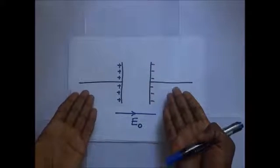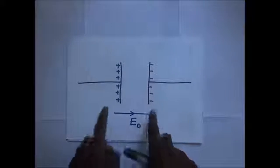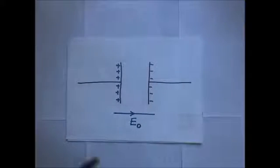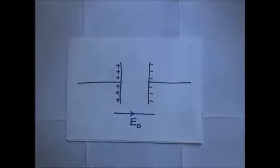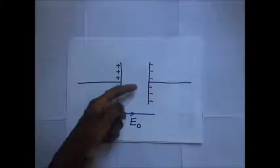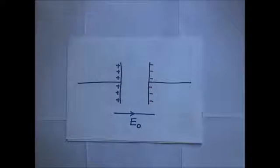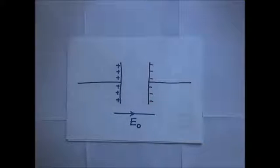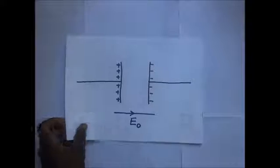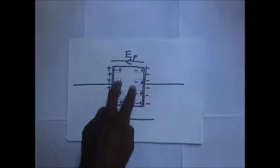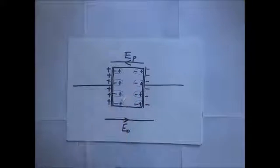Here we have a capacitor with two plates — a negatively charged plate and a positively charged plate — with no dielectric in between. In between the plates there is a field acting in one direction, which we call E₀. We are now going to introduce a dielectric in between these two plates to observe what happens.